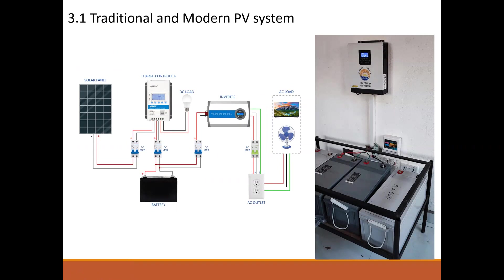In the last two lectures I presented the traditional PV system, which includes the solar panel, charge controller, battery, and inverter. Moving forward, I now present a modern PV system. With a modern PV system, there is a hybrid inverter — shown here with the brand Northern Z Power — which has an embedded charge controller and can accept AC input and AC output.